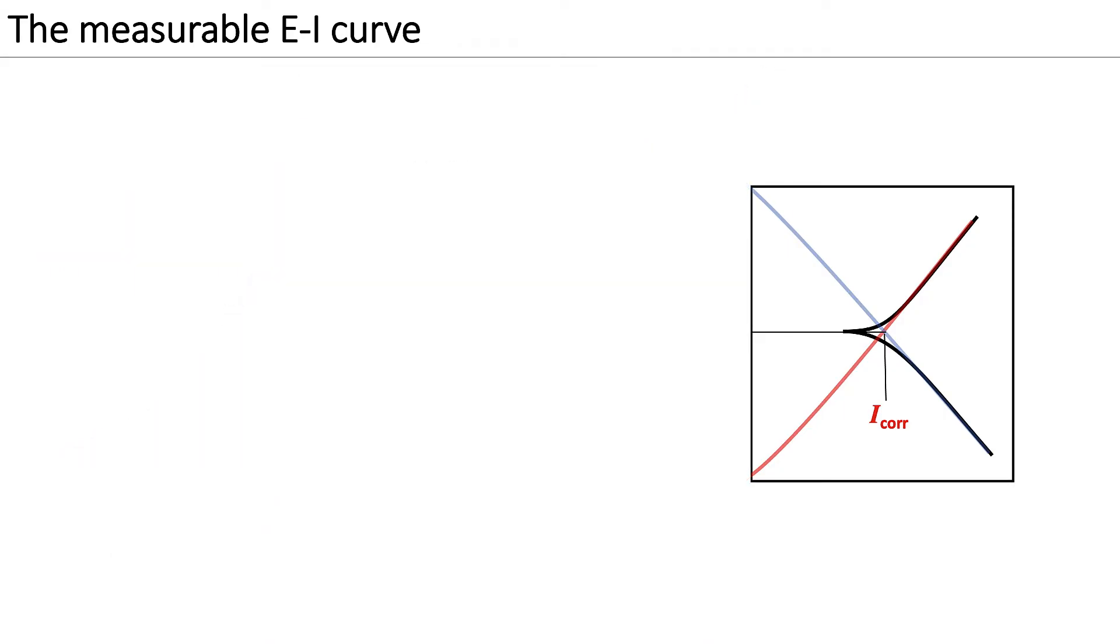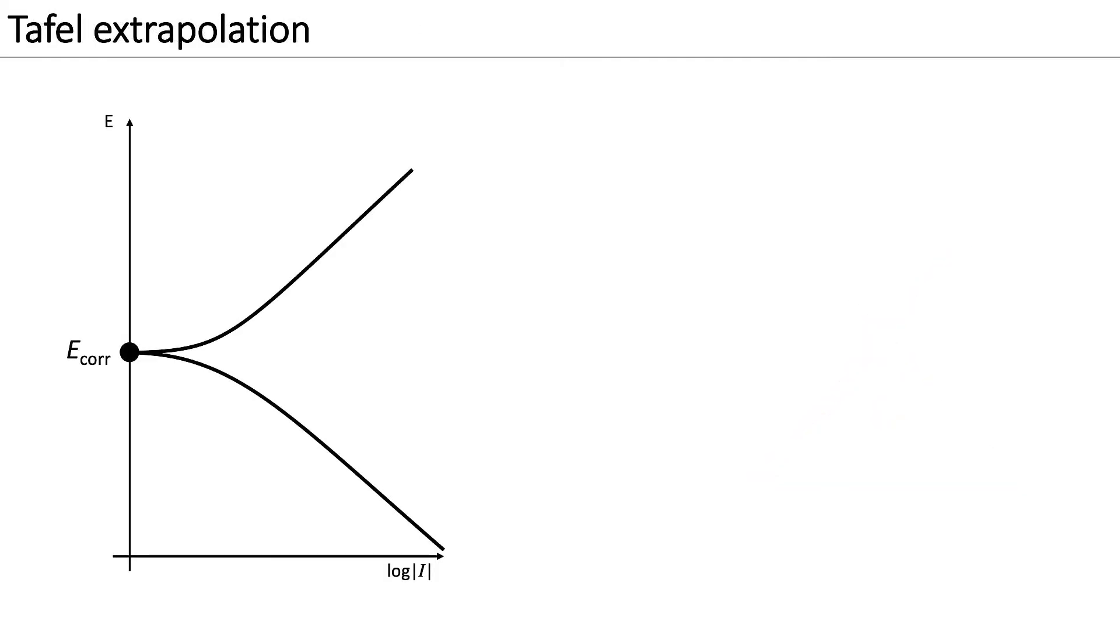Let's zoom in on this measured curve in the semi-logarithmic plot. The mathematical description of this measured curve is given by the following equation. It shows the relation between the net current i-net and the potential E.